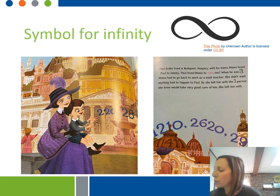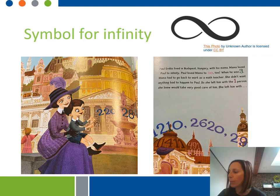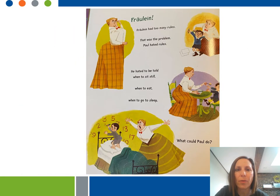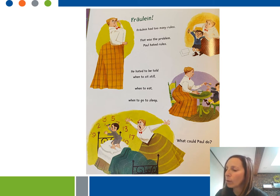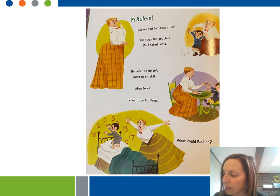When he was three, mama had to go back to work as a math teacher. She didn't want anything bad to happen to Paul, so she left him with one person she knew would take very good care of him. She left him with Fräulein. Fräulein had too many rules, and that was a problem because Paul hated rules.